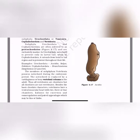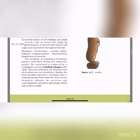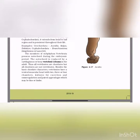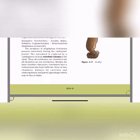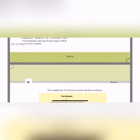In subphylum Vertebrata, members possess notochord during the embryonic period; the notochord is replaced by a cartilaginous or bony vertebral column in the adult. Thus all vertebrates are chordates, but all chordates are not vertebrates. Vertebrates additionally have a ventral muscular heart with two, three or four chambers; kidneys for excretion and osmoregulation; and paired appendages — fins or limbs.